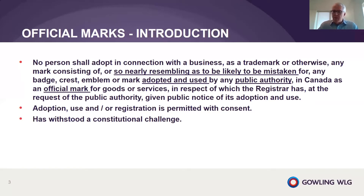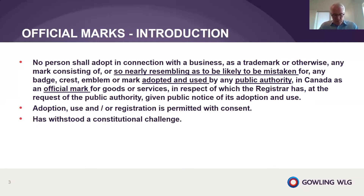The Trademarks Act provides for a broad prohibition with respect to official marks in section 9: no person shall adopt in connection with the business as a trademark or otherwise any mark consisting of or so nearly resembling as to be likely to be mistaken for any badge, crest, emblem, or mark adopted and used by any public authority in Canada as an official mark for goods or services in respect of which the registrar has, at the request of the public authority, given public notice of its adoption and use. There are several key words and phrases in the definition.